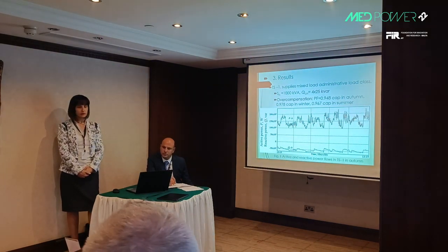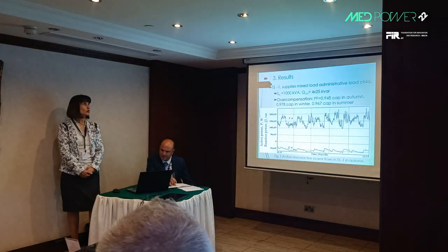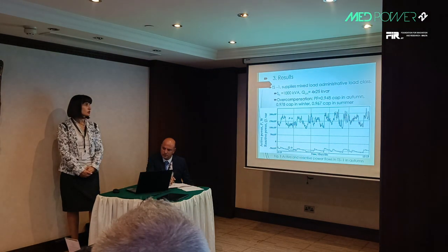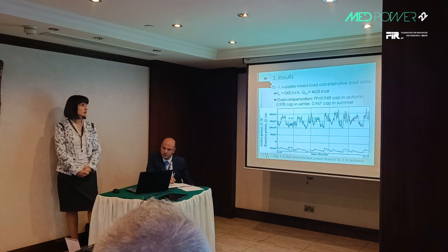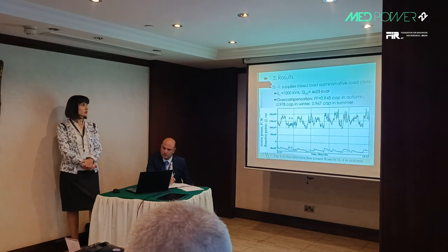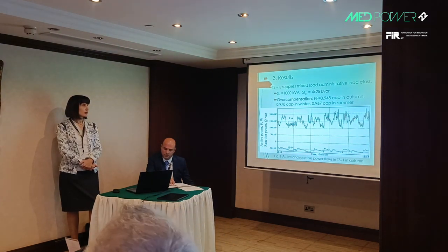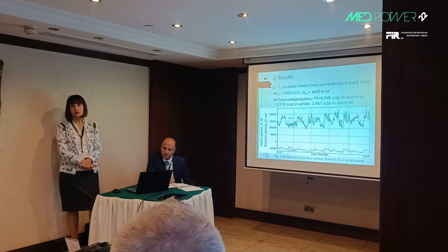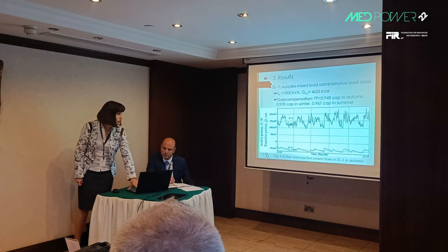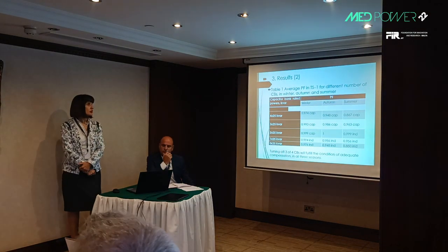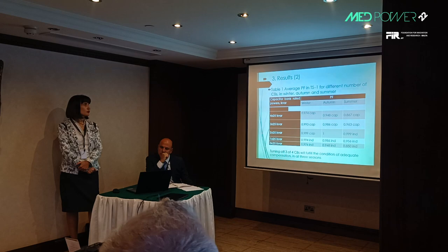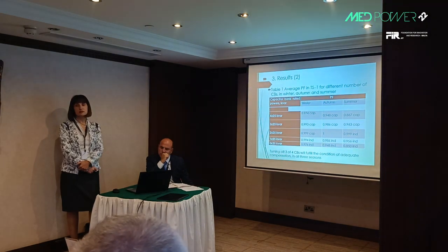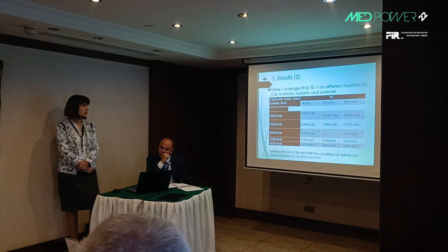As an example, transformer substation 1 is selected. It is found that overcompensation occurred in all seasons, which is visible in the graph because reactive power is negative. It is also found that uninstalling three capacitor banks should bring the power factor into the proper range, and that only one capacitor bank with a rated power of 25 kvar should be sufficient for this transformer substation.